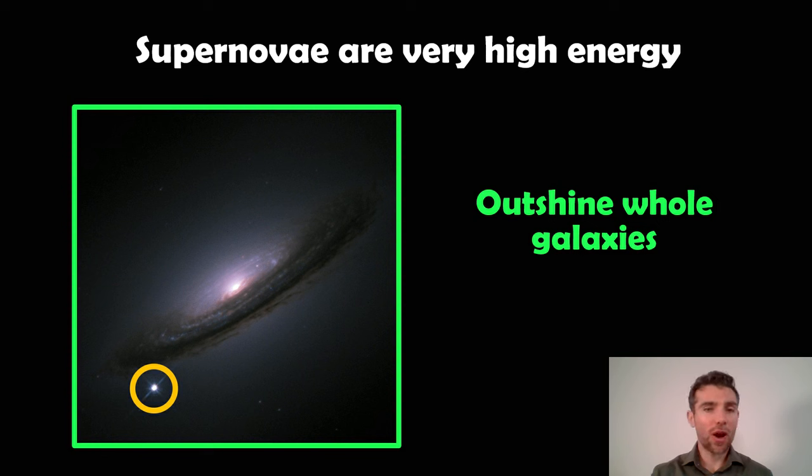Supernovae are very high energy. They will outshine an entire galaxy. You've got an example here, this was probably a type 1a, going off in a spiral galaxy, and it will outshine the whole galaxy. These are very powerful explosions.